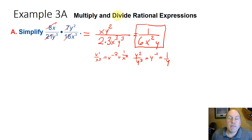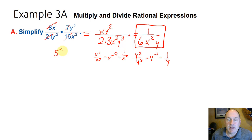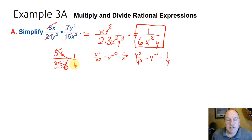You would get the same answer multiplying 8 times 7 = 56 and 21 times 16 upfront, still getting 1 over 6, but it's far easier to simplify in that first step.